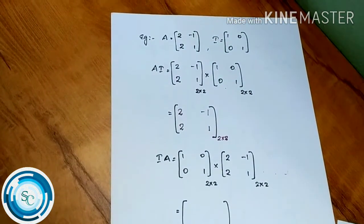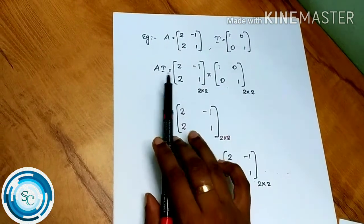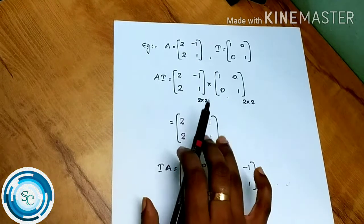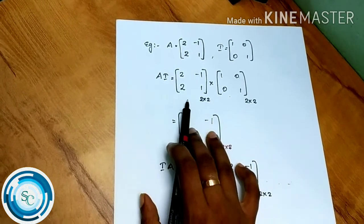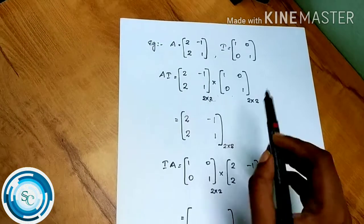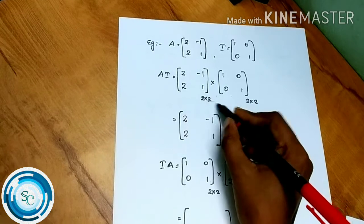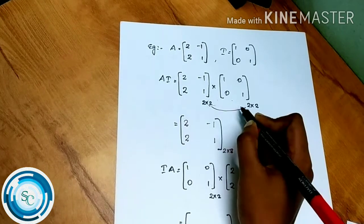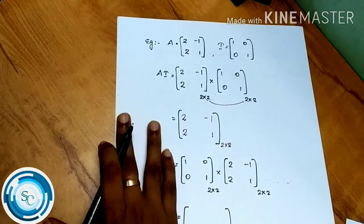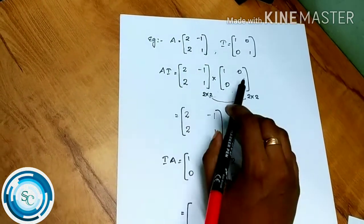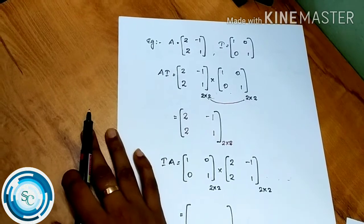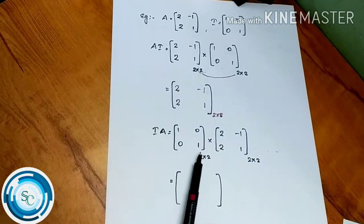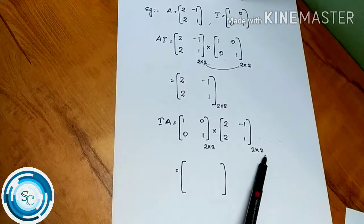That is the property: A·I = A. The matrix A is a 2×2 dimensional matrix. Now we have A·I where I is the 2×2 identity matrix: 1, 0, 0, 1. And A is 2, -1, 2, 1 — also 2×2 dimensional.